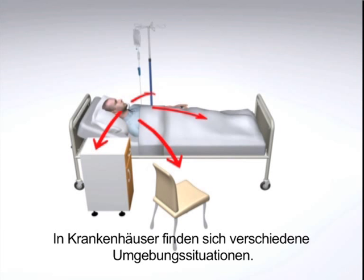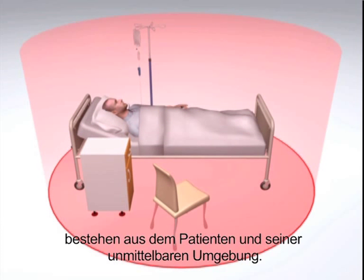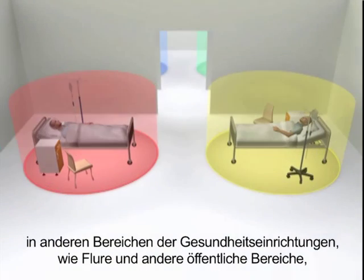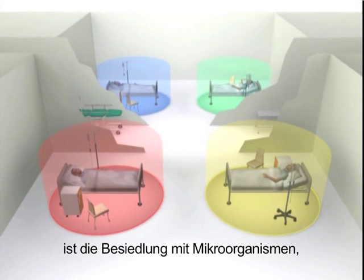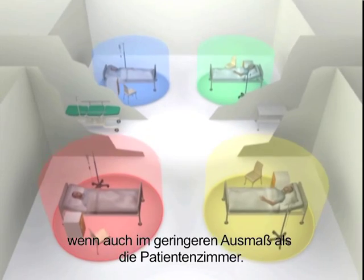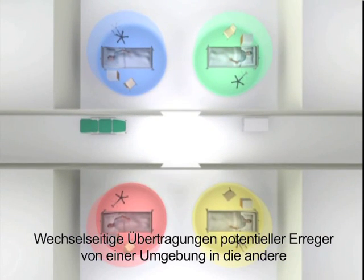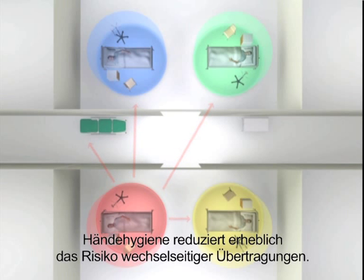Hospitals contain a multitude of environments. Some of these, dubbed patient zones, consist of a patient and his or her immediate surroundings. As a result of contamination by both healthcare workers and patients, other areas of the healthcare setting such as corridors and public areas are also colonized with microorganisms, though to a lesser extent than patient rooms. Cross-transmission of potential pathogens from one environment to another occurs through healthcare workers' hands. Hand hygiene greatly reduces the risk of cross-transmission by this route.